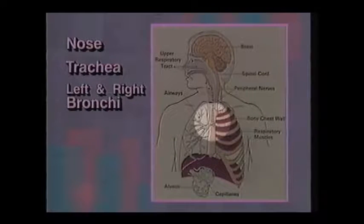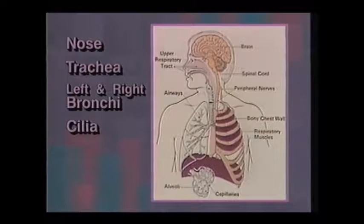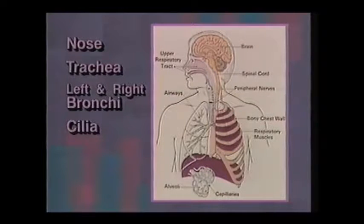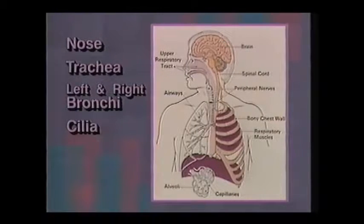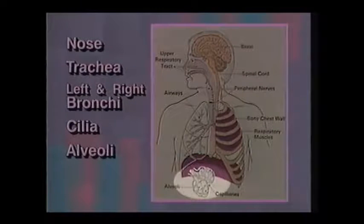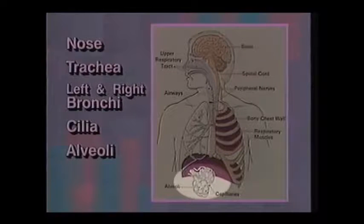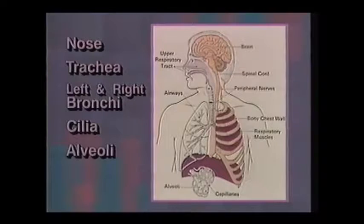These airways are lined with tiny hair-like projections called cilia, which function to constantly sweep particles and bacteria upward to be coughed out. The right and left bronchi further subdivide into smaller bronchi, which terminate in tiny air sacs called alveoli. There are around 300 million of these alveoli, which are pictured here as an enlargement below the diaphragm. These air sacs make up the oxygen exchange surface of the lung.